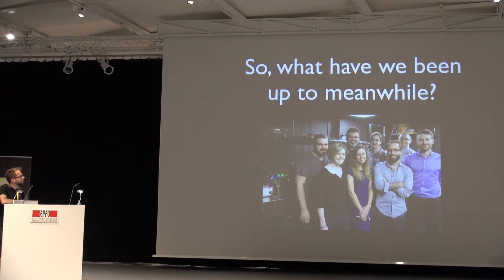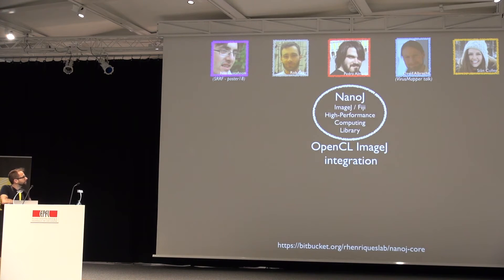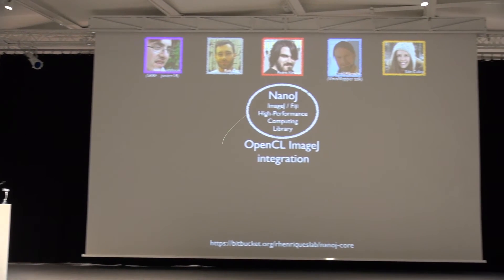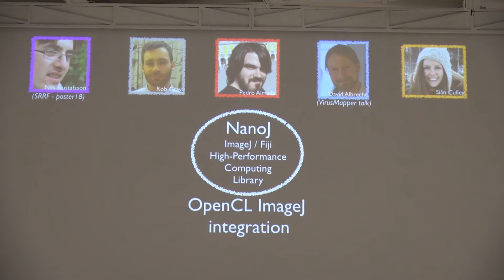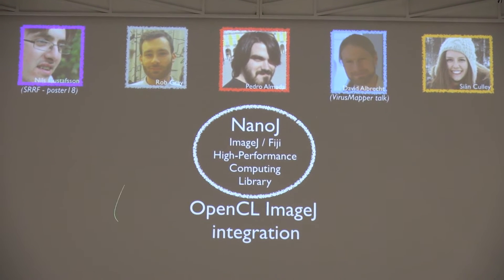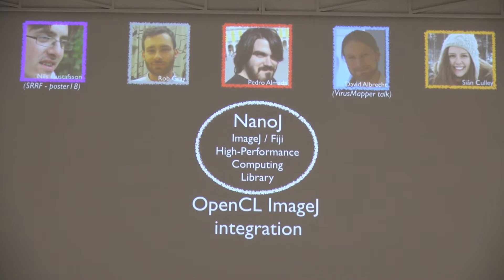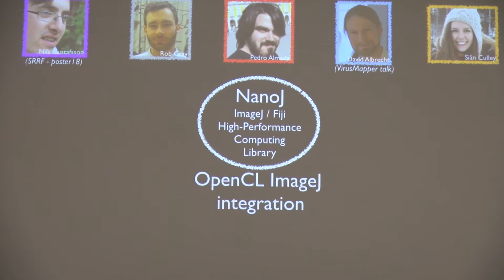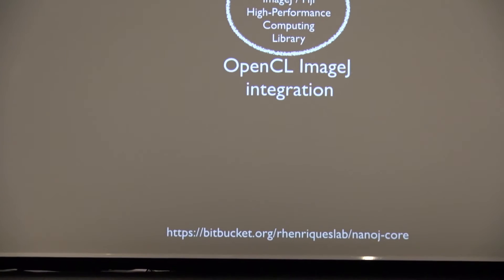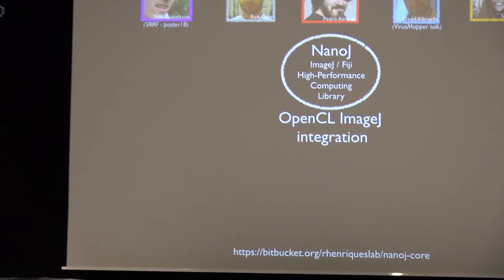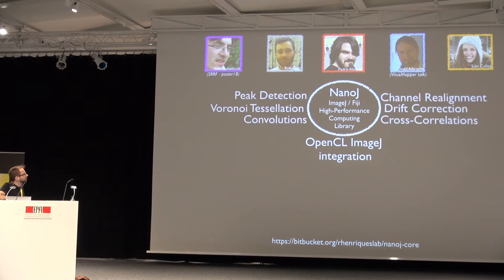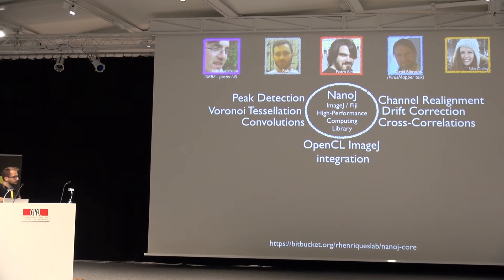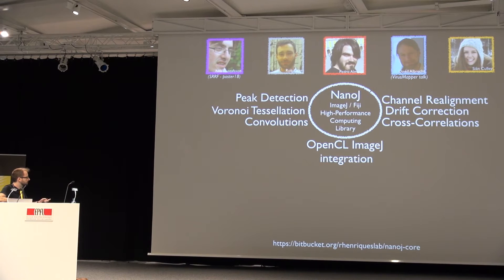So what are we up to meanwhile? I started the lab, and with the start of the lab I began developing NanoJ with a team. NanoJ is actually just a library for ImageJ, but it's a library that allows you to do OpenCL integration. Pretty much what we try to do with NanoJ is to convert your gaming workstation, which is not that expensive, into a cluster. Every time we start using OpenCL in our calculations, we end up with a 10 to 100 times speedup in terms of computation. This enables us to do a lot of things in terms of image analysis, and most importantly, it enabled us to develop the tools you see here.